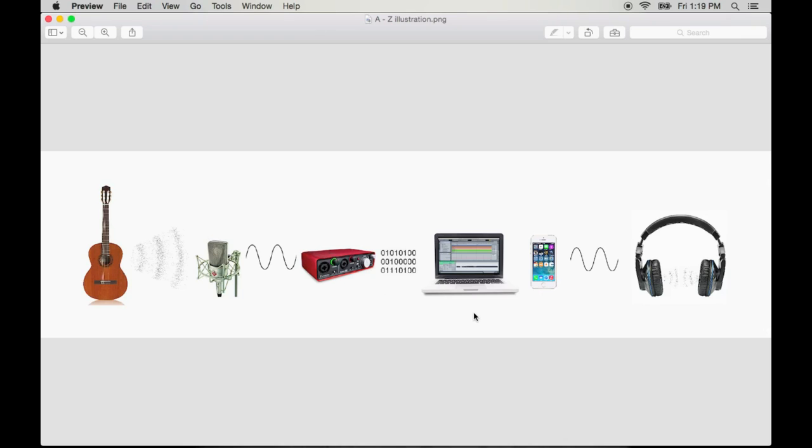Once this information is received by the computer, it can be stored, edited, and prepared for commercial distribution. Once distributed, the playback device converts the digital signal back into an analog voltage signal, which travels through the speaker cable, causing the speakers to vibrate. And finally, the vibration of the speakers cause waves of air pressure to move your eardrums.